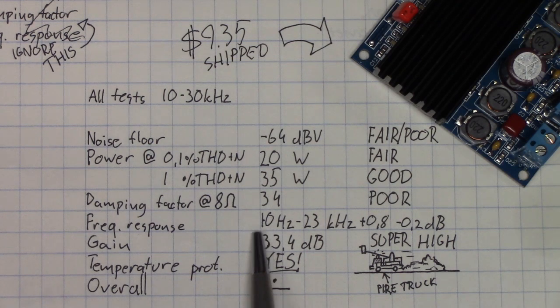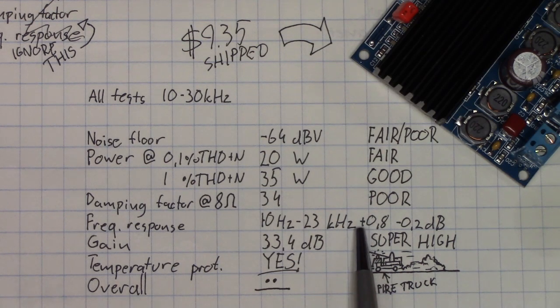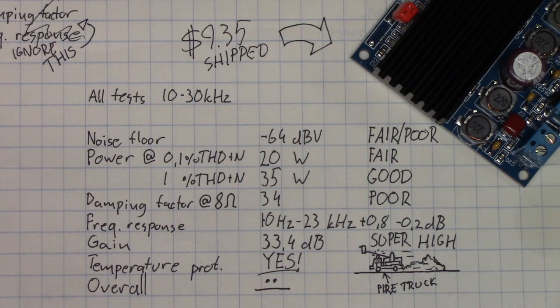Frequency response, actually pretty good. 10Hz to 23kHz, staying within a decibel. There's no low frequency roll-offs to really think about. This thing will probably do a good job powering a small subwoofer, something like that. Of course, it's already made up of two bridge-tied channels, so you cannot bridge it to get 4 times the power, but you can run stereo subwoofers on it which might be just as good depending on your application. The gain, 33.4 dB, insanely high. A cause for the noise floor, probably. Temperature protection, yes, present, working.